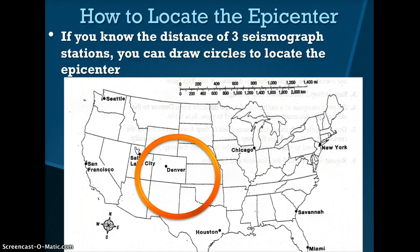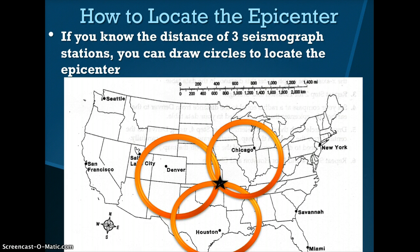If you do this a second time, the circles will overlap twice, giving you two possible locations of the epicenter. If you draw a third circle, the circles will only overlap once. The epicenter is located where all three circles overlap.